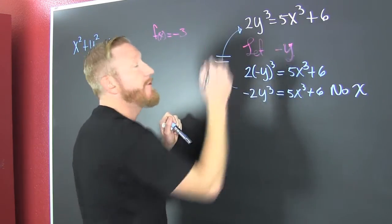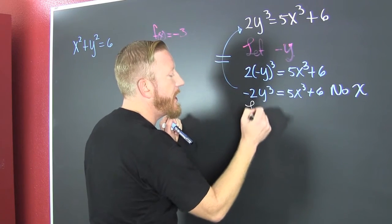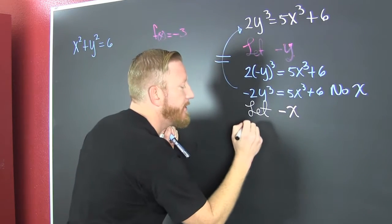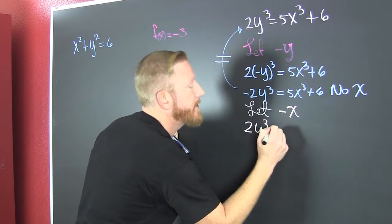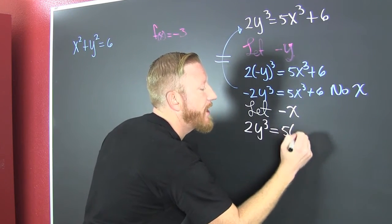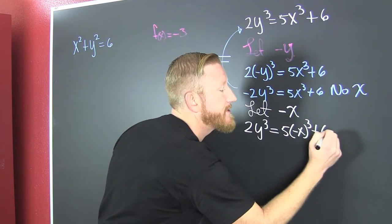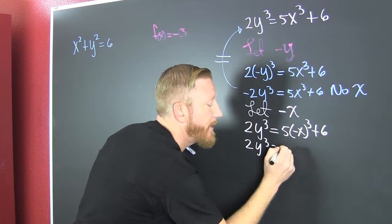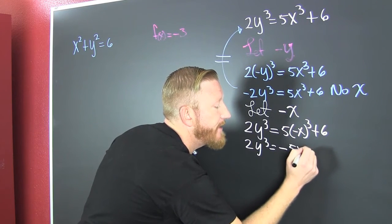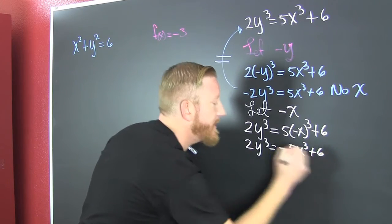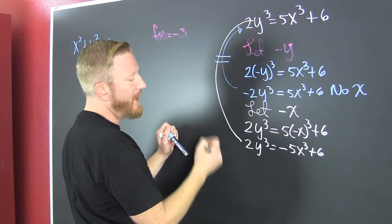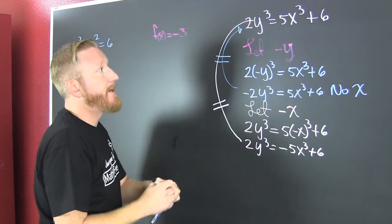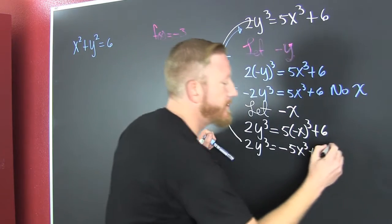Then we check for y-axis symmetry. We let negative x and substitute it in: two y to the third equals five times negative x to the third plus six. Since it's an odd power, that's two y to the third equals negative five x to the third plus six. Are these the same? No, that's not equal. So it is not y-axis symmetric.